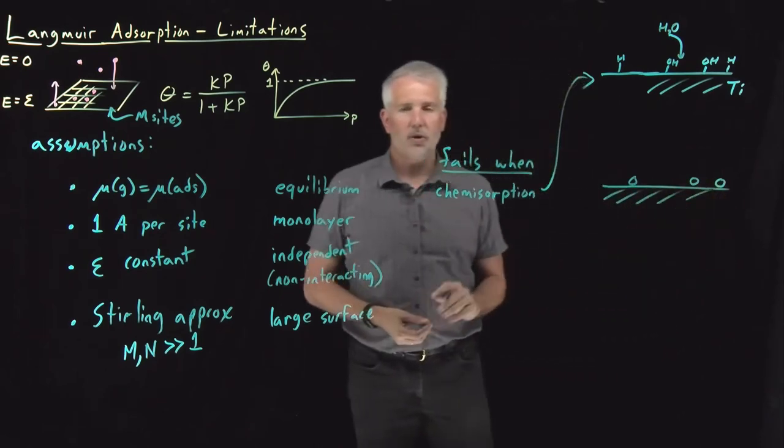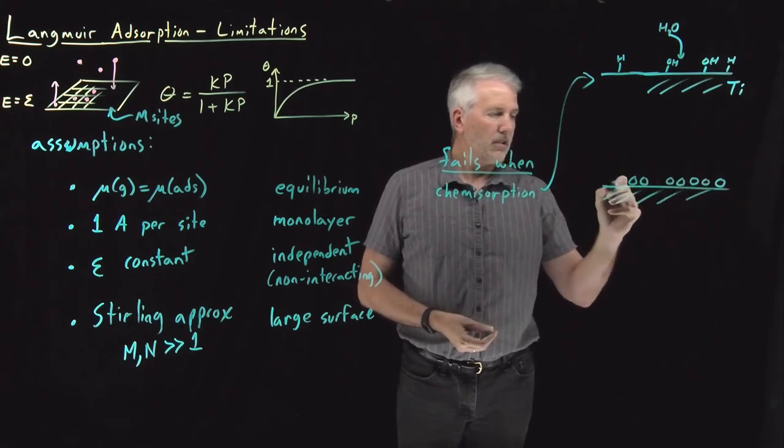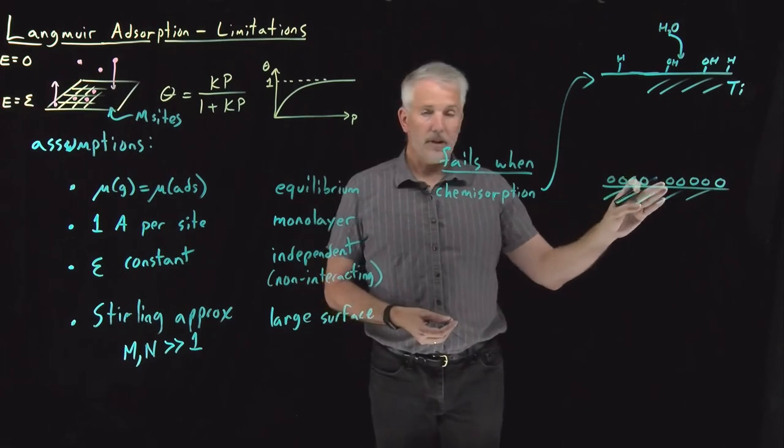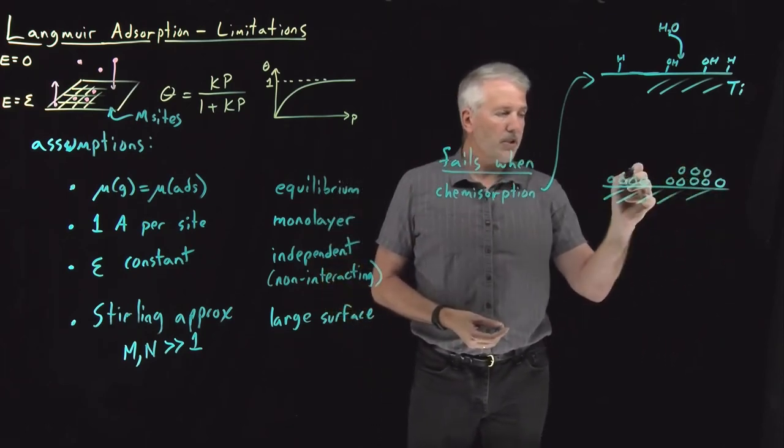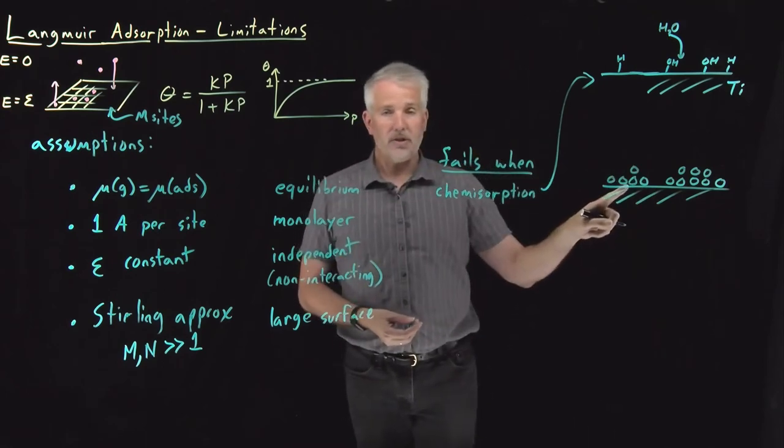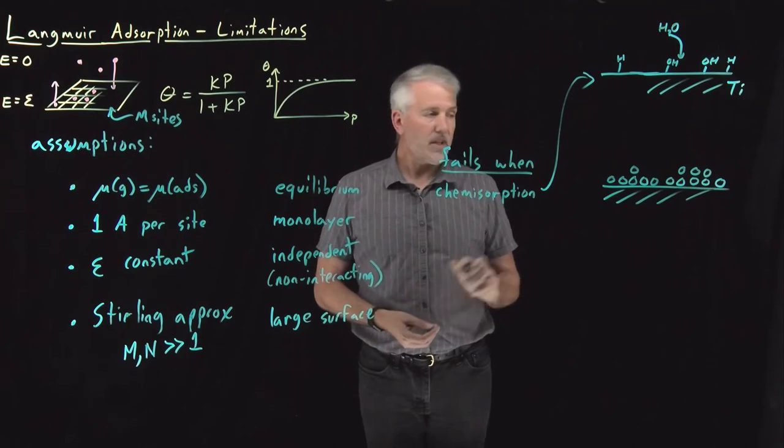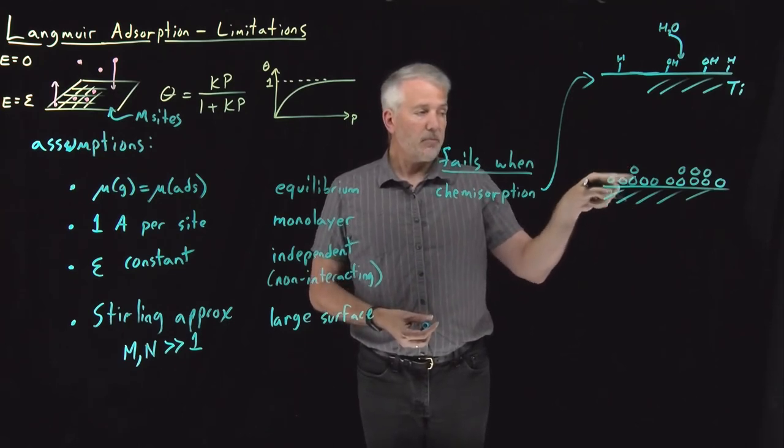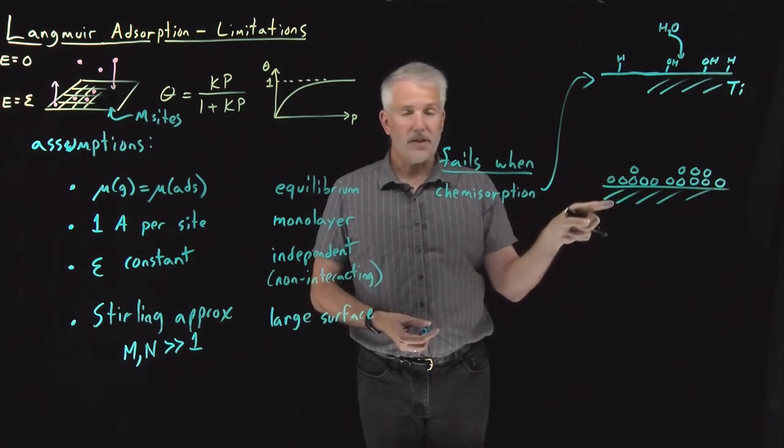As I adsorb more and more molecules onto the surface approaching a full monolayer, one thing that can happen is not only can I fill up the rest of the surface, but in fact adsorbate molecules can begin to adsorb on top of other adsorbate molecules rather than on top of the surface sites. That can happen in particular when the interactions between these gas phase molecules are stronger than the interaction between the gas phase molecule and the surface.